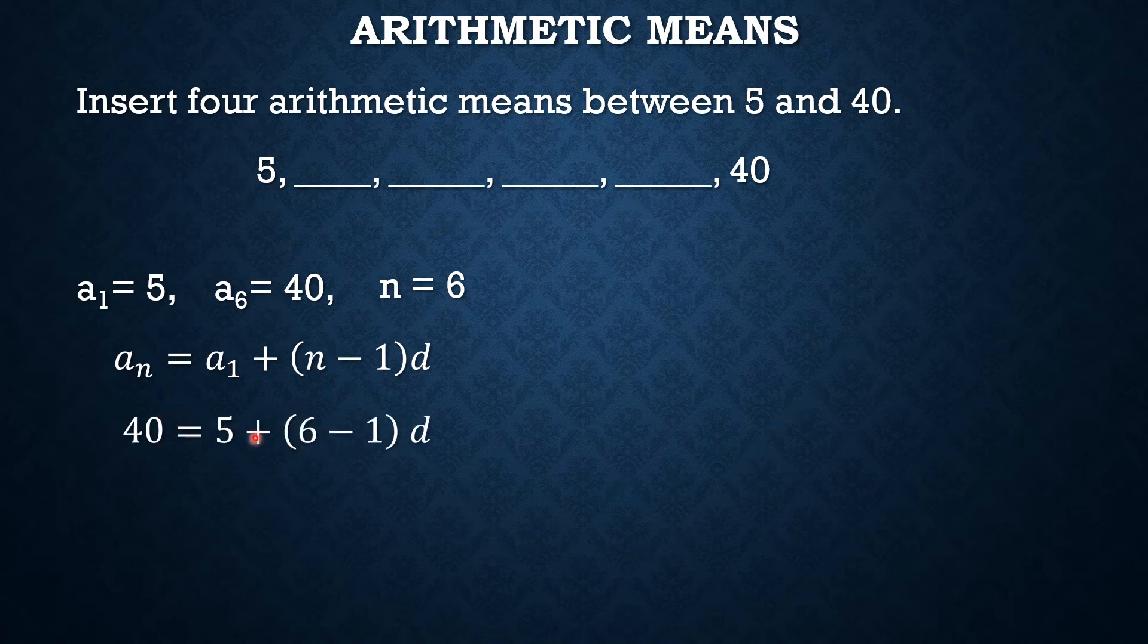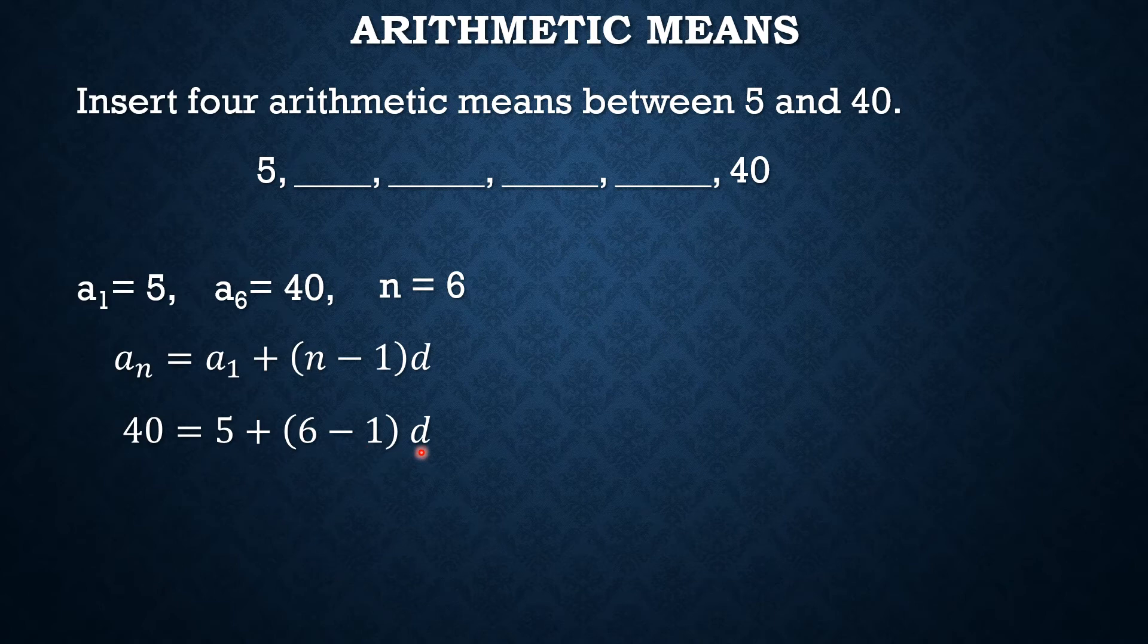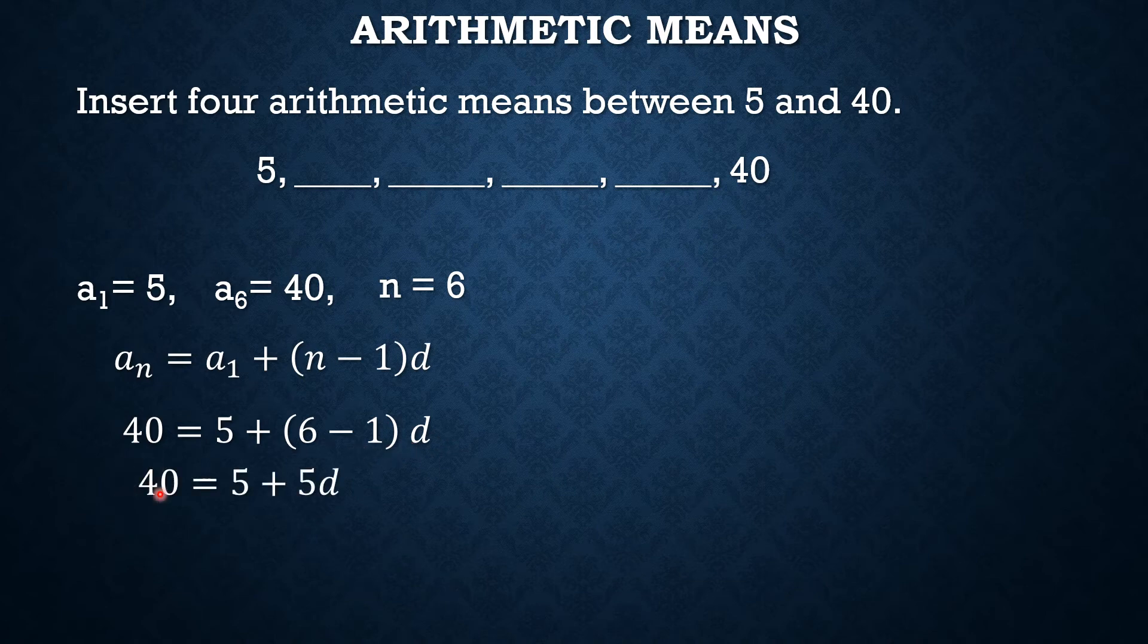Now, by substituting the values, we now have 40 as our last term. A sub 6 is equal to our first term which is 5 plus our n which is 6 minus 1 times d. Since d, ito yung kailangan natin ma-solve. Since d is the missing, by simplifying, we now have 40 is equal to 5 plus 6 minus 1 that is 5 times the common difference d and that is 5d.